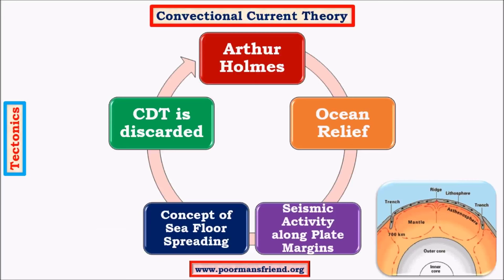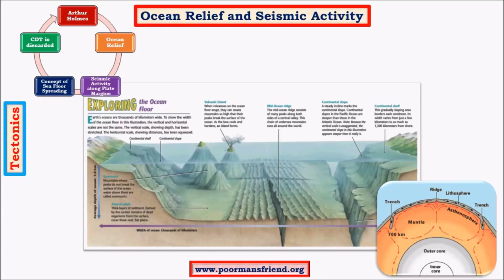The first important concept under sea floor spreading is the continental convection current theory, explained by Arthur Holmes in the 1930s. This theory mainly came into existence after observing the ocean relief. We will see how ocean relief made a difference to the understanding of movement of earth's lithospheric plates. Another important factor is seismic activity along plate margins. Based on these proofs — ocean relief and seismic activity — came the concept of sea floor spreading, explained by Harry Hess.